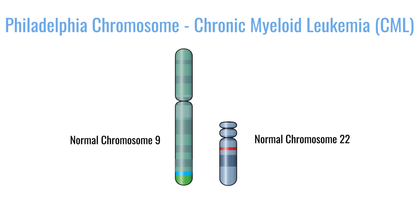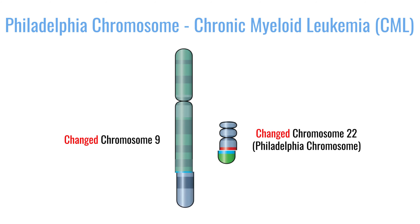One of the most famous examples in cancer was what's called the Philadelphia chromosome, discovered in Philadelphia in patients with chronic myelogenous leukemia. It subsequently turned out that this chromosome represented a translocation — a joining between chromosome 9 and 21.